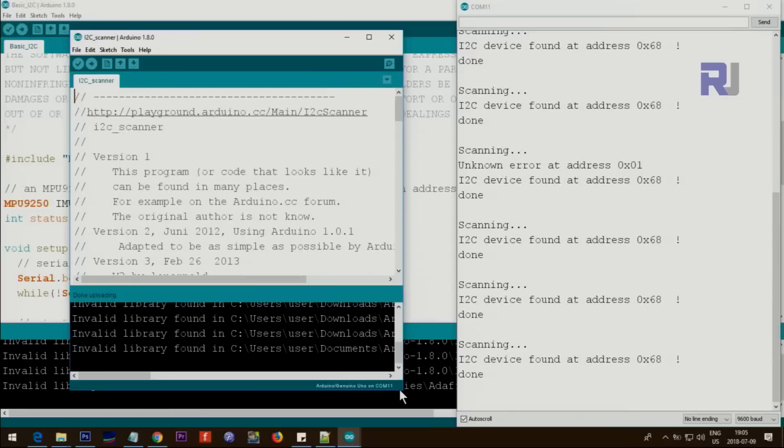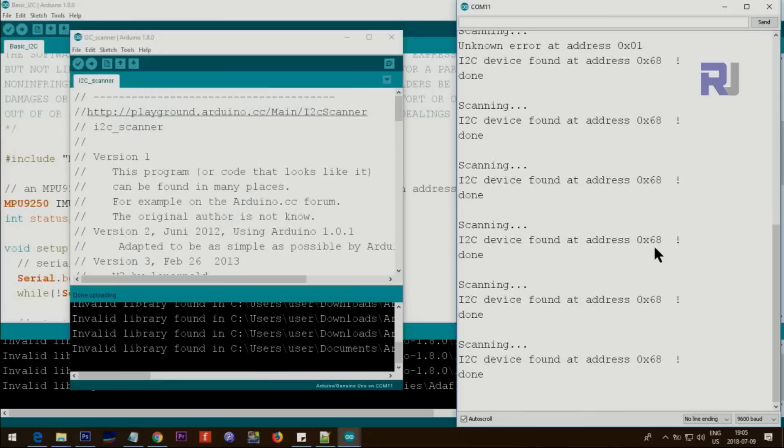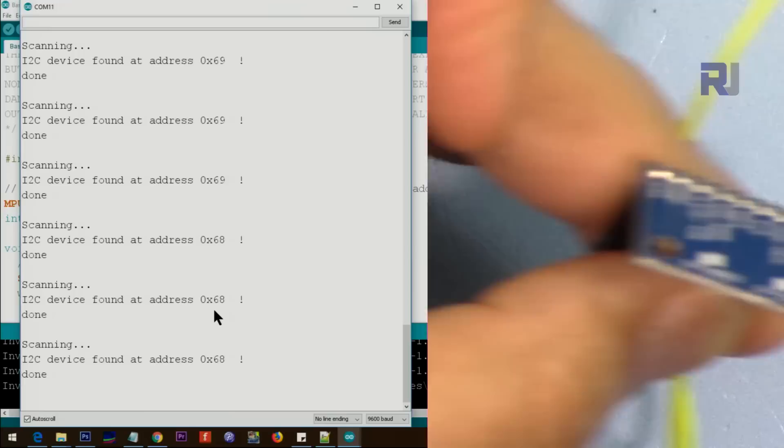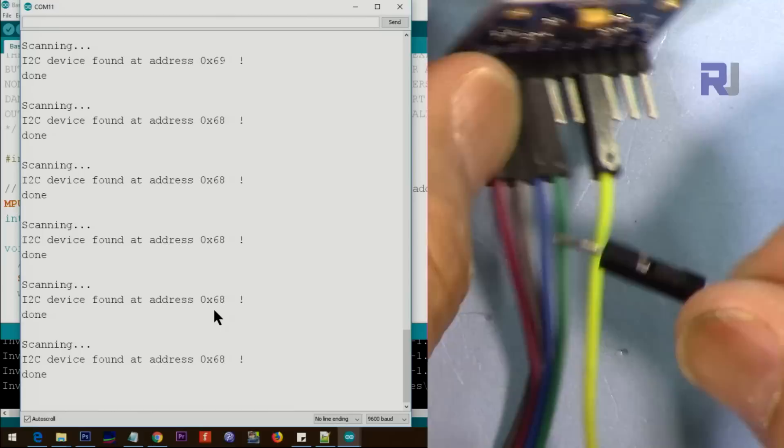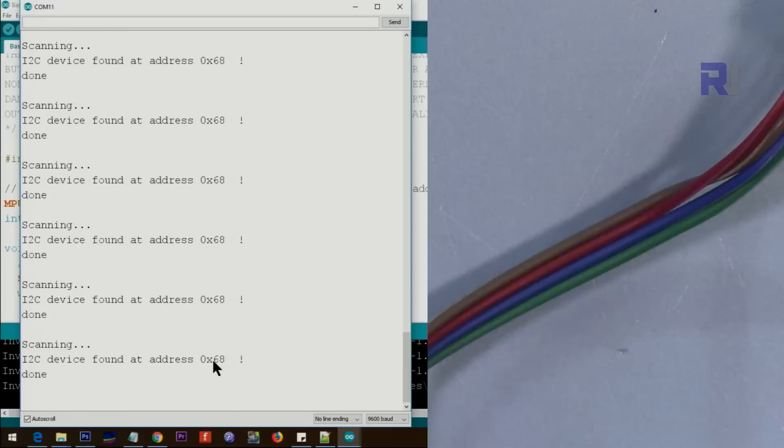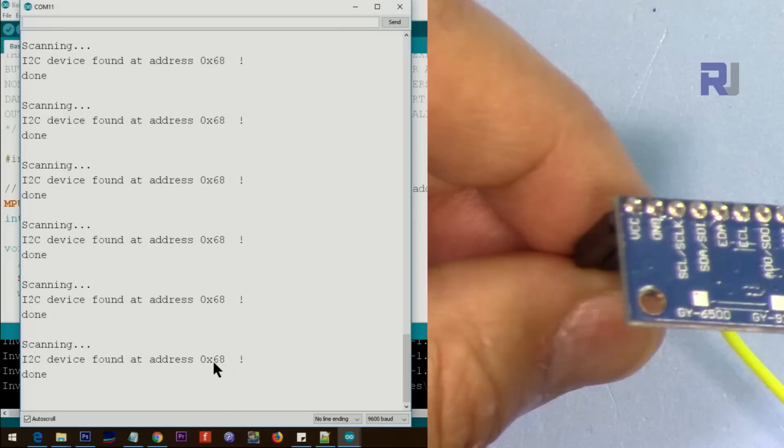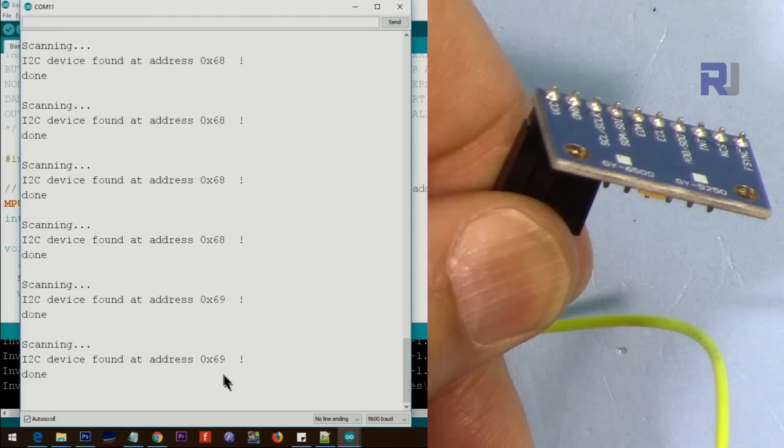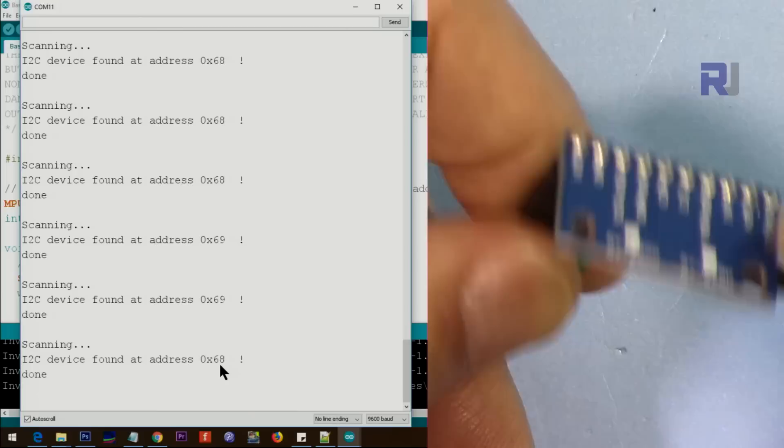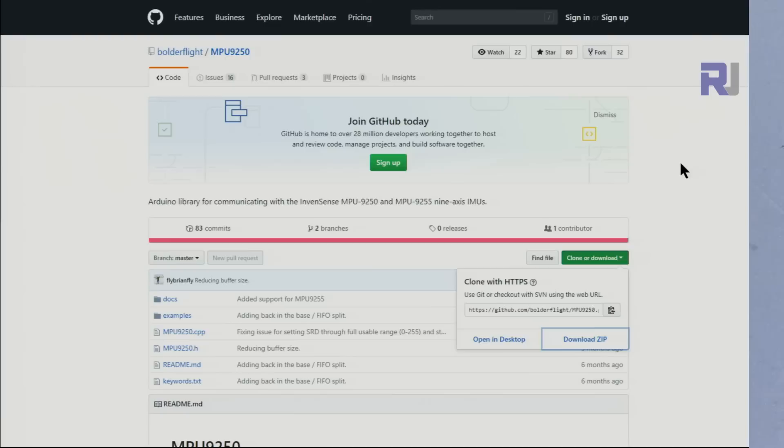When I run the I2C scanner, this is how it shows the address which is 68 - that's hex 0x68. You can see the address shows 68. Now if I connect this ADO pin, the 4th pin from the right, if I connect this to 5 volts, then this becomes 69. So now it changed to 69. If I disconnect this again it becomes 68. So in case you need a different address you just connect this pin ADO to 5 volts or high and the address will change.